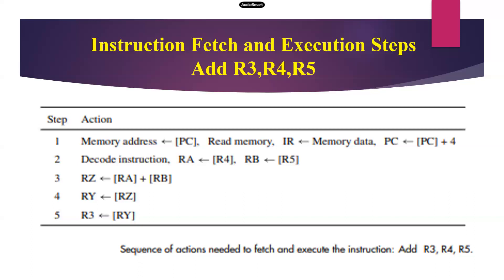Now we are ready to fetch the data. The source operands are R4 and R5, so the content of R4 is transferred to RA and the content of R5 is transferred to RB. Now both values are available in registers RA and RB. Step three: RZ = content of RA added with content of RB; the result is transferred to RZ. That result will then be temporarily moved — RZ will be transferred to RY — and finally the content of RY is transferred to R3.